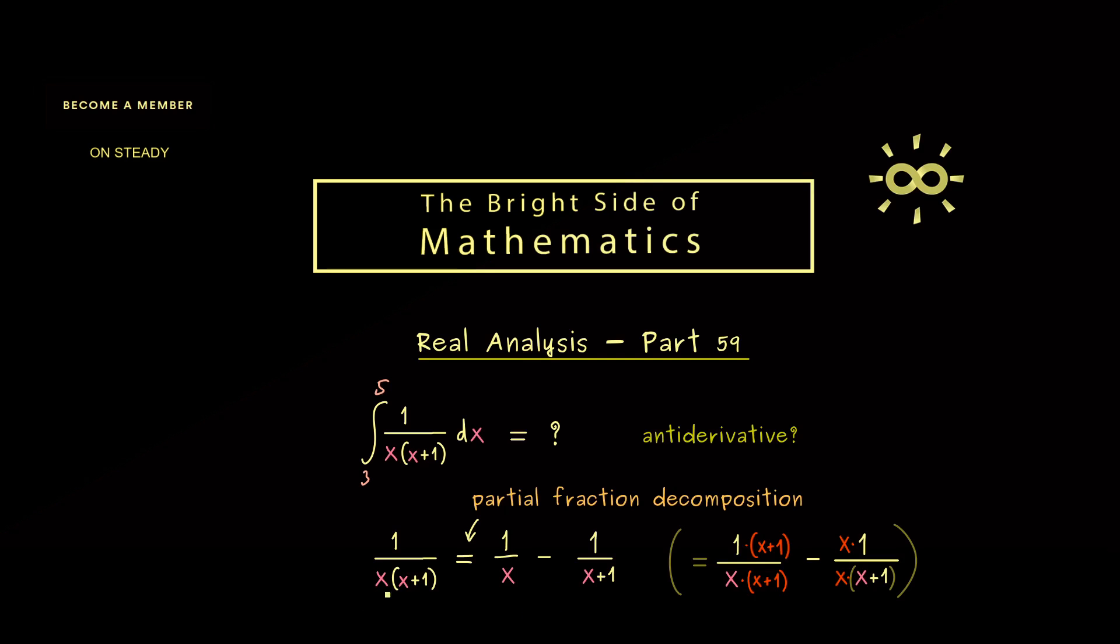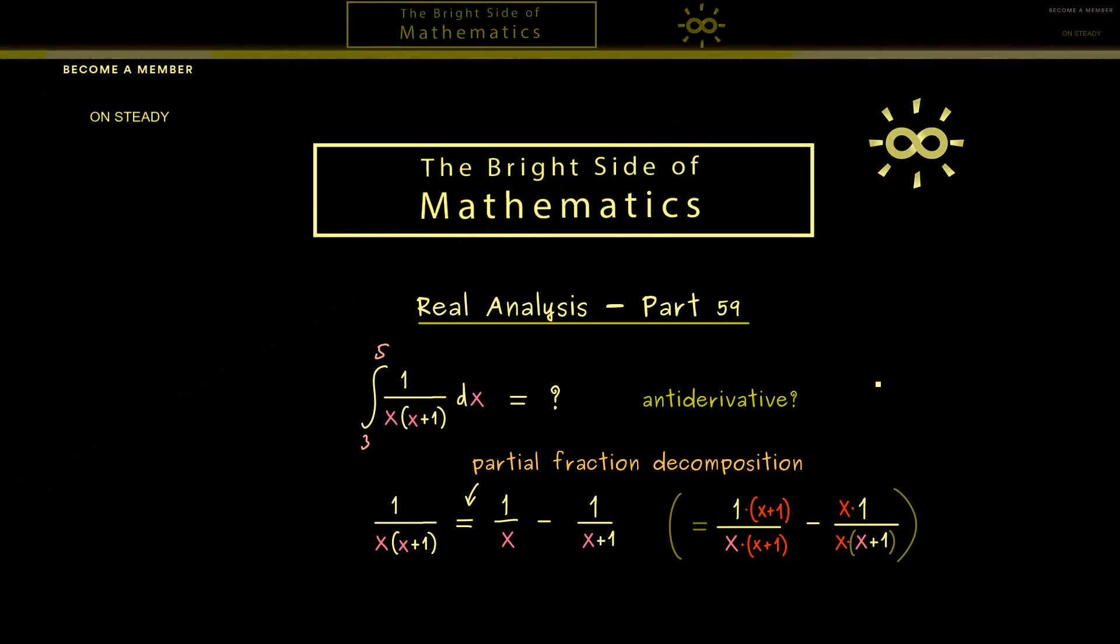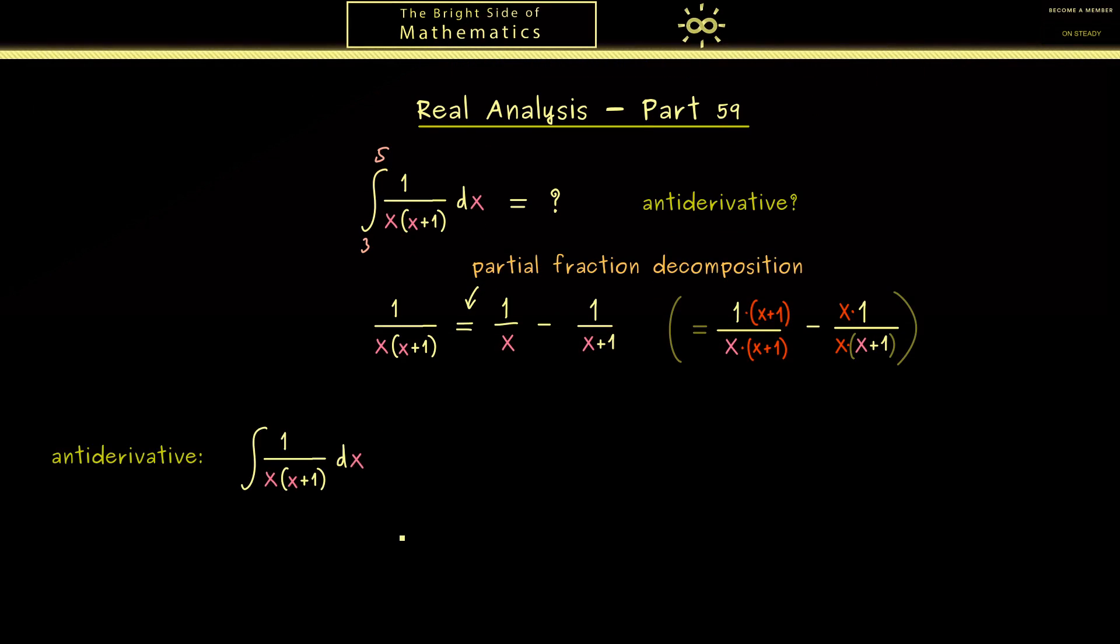Or in summary, we can decompose this fraction into two partial fractions. Therefore this rewriting here is called the partial fraction decomposition. And in fact this helps a lot for finding the antiderivative.